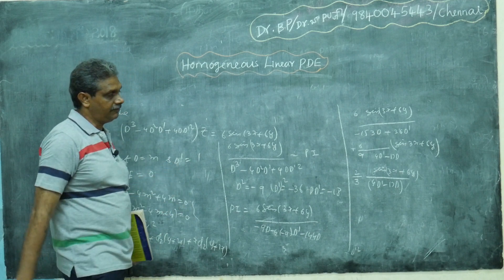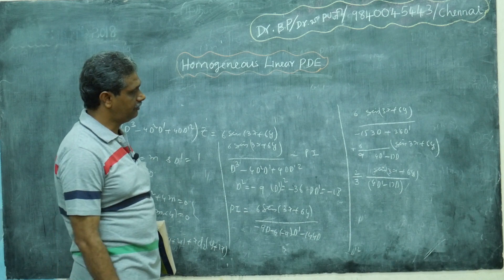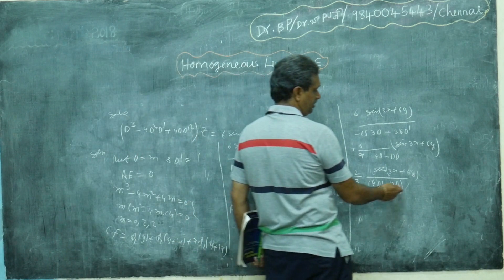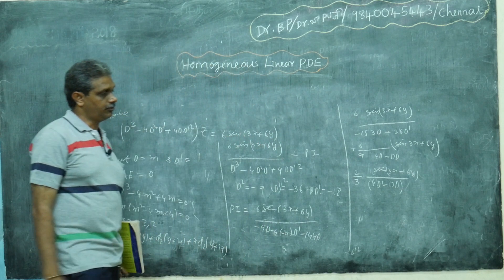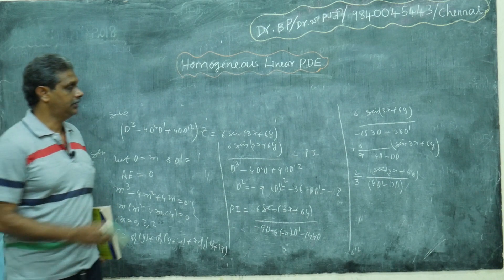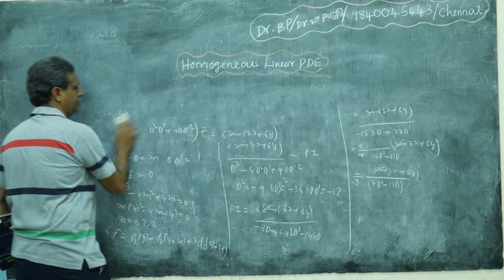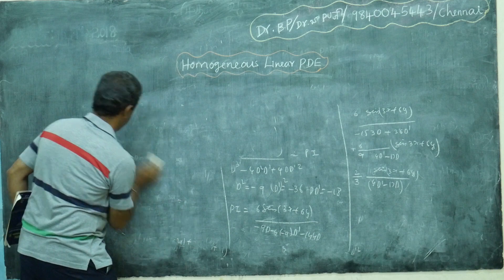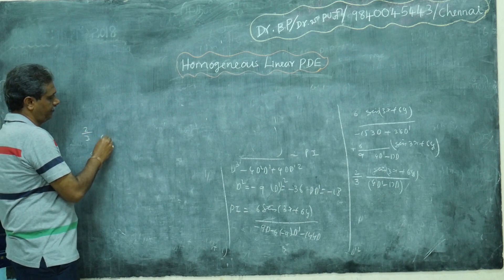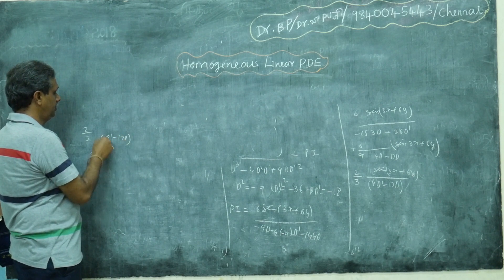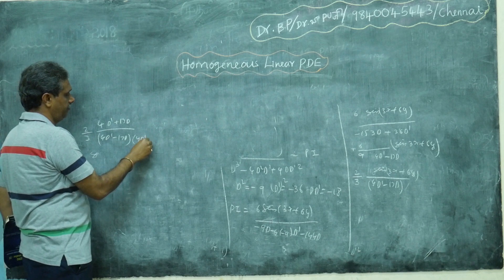Once you reach this stage with only single D' and single D in the denominator, you need to rationalize. Multiply and divide by the conjugate (4DD' + 17D). We have no right to change the problem, but we can do this magic. So multiply and divide by (4DD' + 17D), giving numerator (4DD' + 17D) and denominator (16D'² - 17²D²).